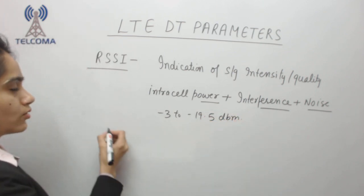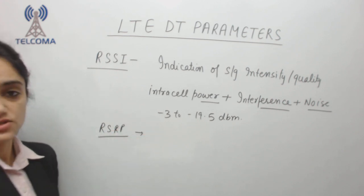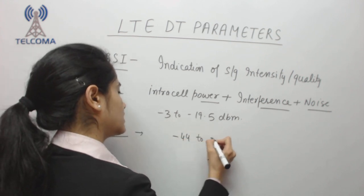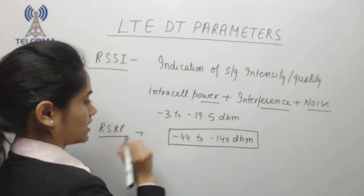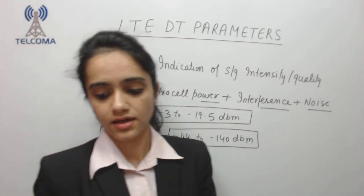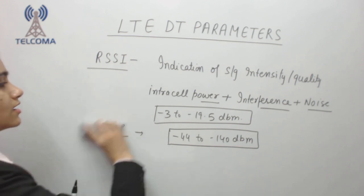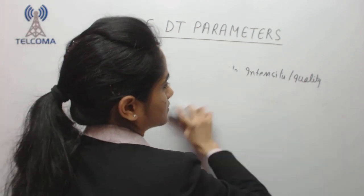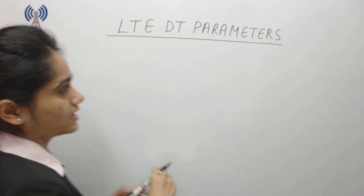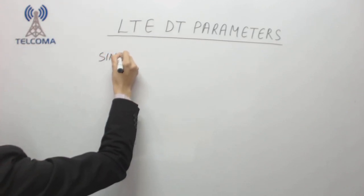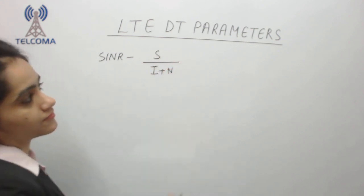RSRP value ranges from minus 44 to minus 140 dBm. Having covered RSRP, RSRQ, and RSSI, next we have SINR. SINR stands for Signal to Interference plus Noise Ratio, which is calculated as signal power divided by interference plus noise.